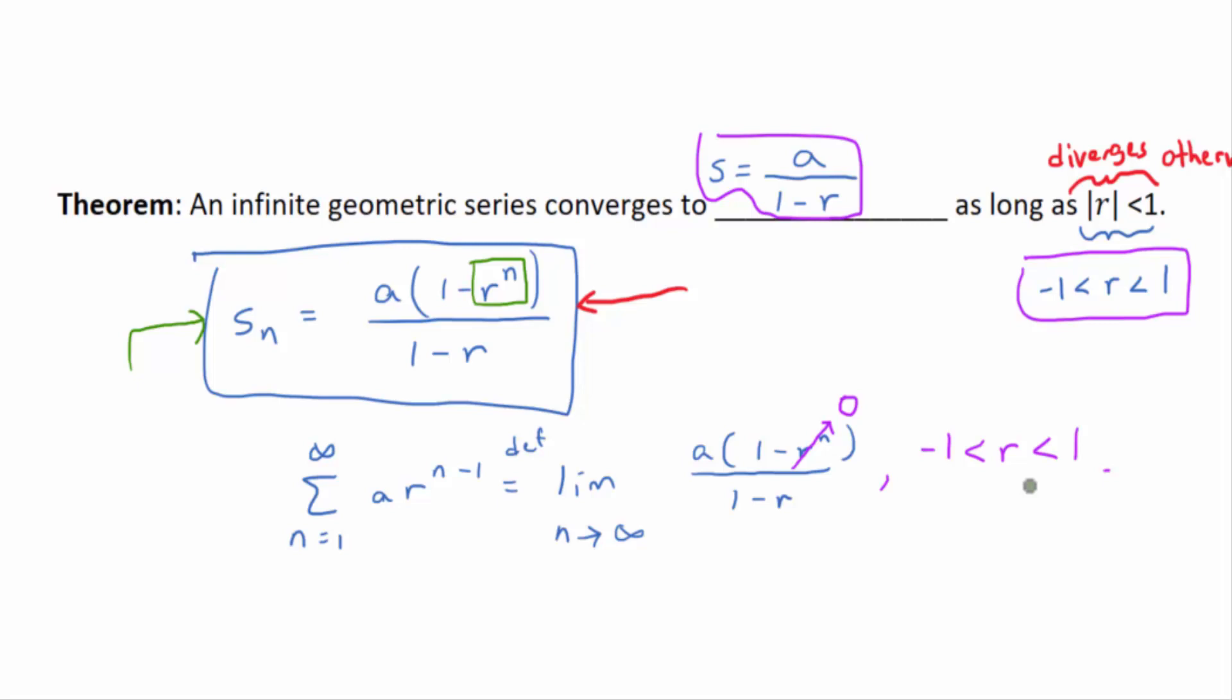For the sequence R to the n to converge, R has to be strictly between negative 1 and 1. So if this guy doesn't converge to 0, then we're going to be subtracting non-diminishing terms when computing Sn for larger and larger n. And so there's no way that Sn could converge to one particular number.